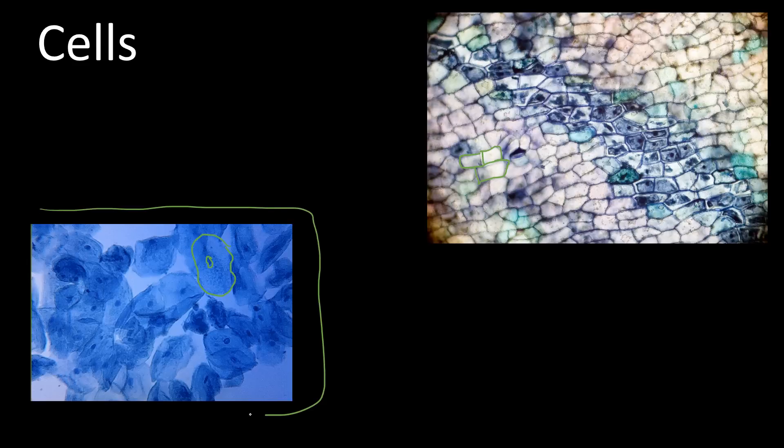Cells come together in groups, and when they do they are called a tissue. So cells that work together in a group are called a tissue. All living things are made of cells.